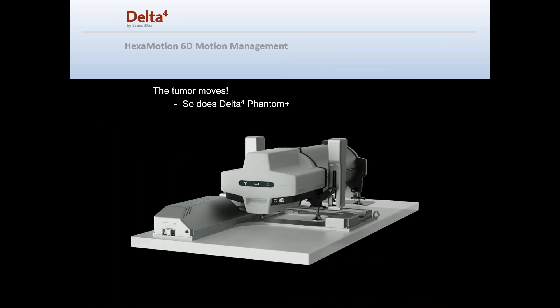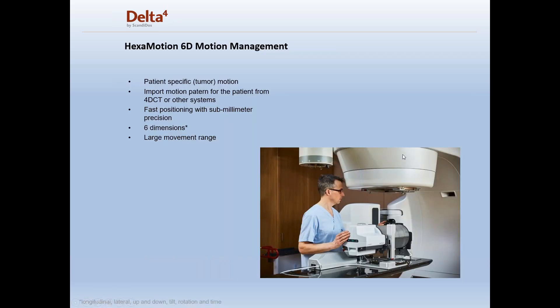The second piece of the motion management system is the HexaMotion. The HexaMotion is a platform used to cradle the Delta IV Phantom Plus and actually move the phantom six-dimensionally, allowing you to move your tumor and track it during your QA process. The HexaMotion 6D motion management system allows you to move the tumor specific to the patient's treatment plan and specific to the 4D CT image set.